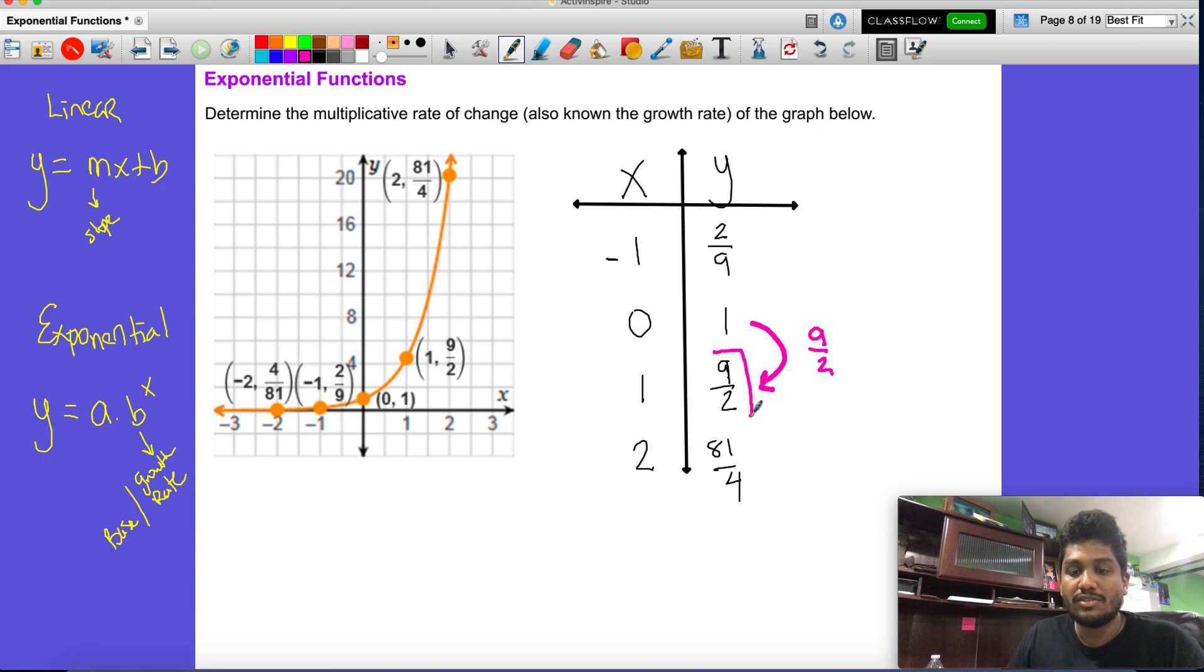If I take nine over two and I multiply it by nine over two, which is what I think it is, does that give us 81 over four? So nine over two times nine over two does give us 81 over four. So this works so far.